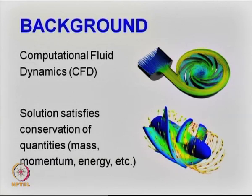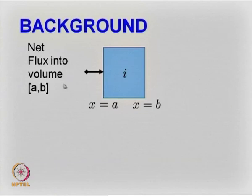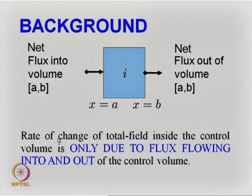What is the basis of finite volume time domain? Let me explain this with a simple control volume labeled i. This is a one-dimensional problem: the domain runs from x equal to a to x equal to b. There is some flux going inside the volume and some flux going out. The only requirement is that the rate of change of the total field inside this control volume is only due to the flux flowing into and out of it.